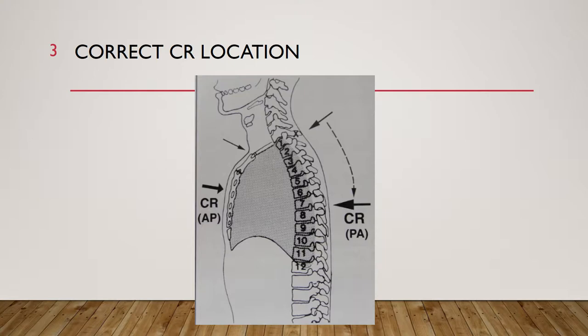When we are x-raying a patient for a chest x-ray, we want to make sure that we are using the correct central ray location. The correct central ray location to the mid chest is T7, which allows for accurate collimation and protection of the upper radiosensitive region of the neck area. It also prevents exposure to the dense abdominal area, which is below the diaphragm, producing scatter and secondary radiation to the radiosensitive reproductive organs.